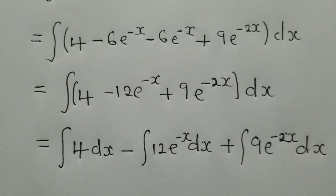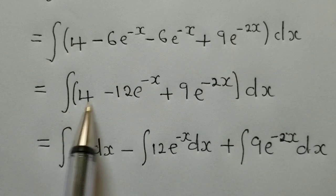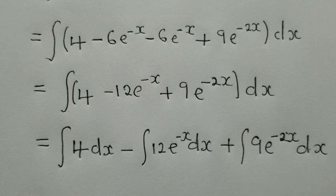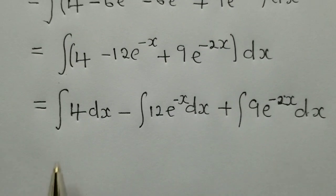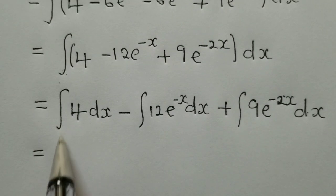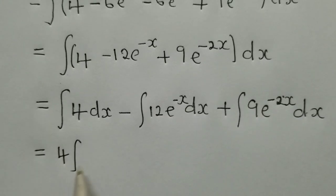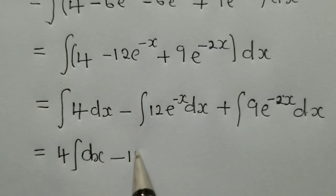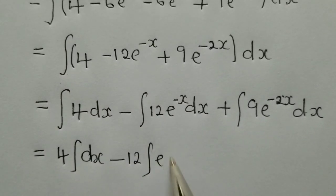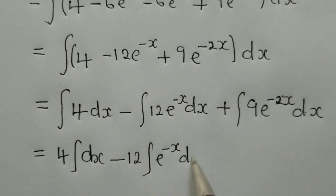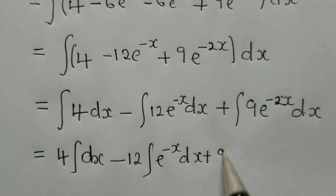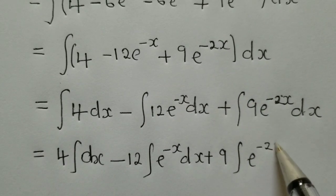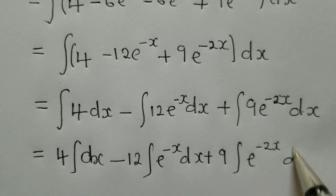As you can see, I've distributed the integral sign. From this stage, the integral of 4 dx — 4 is a constant so it can come out. Negative 12 is also a constant, so it can come out and we remain with the integral of e^(-x) dx. Plus 9 is also a constant; it can come out and we remain with e^(-2x) dx.